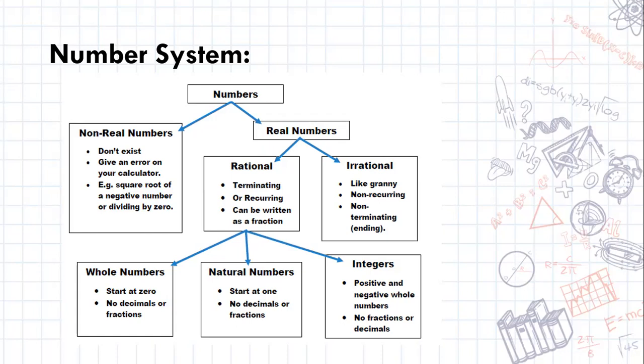Now if you're doing AP maths you will realize that non-real numbers do actually exist and we use the letter i, but for those who are just doing pure maths they don't exist and they will give you an error. Then you get real numbers.